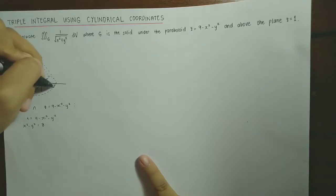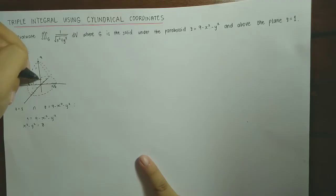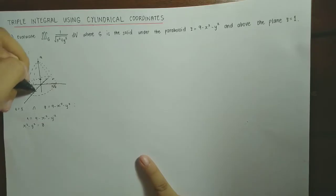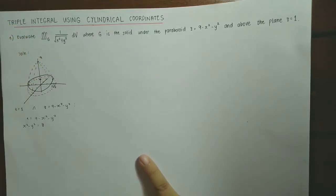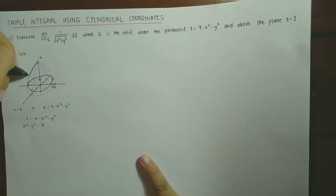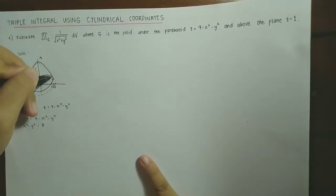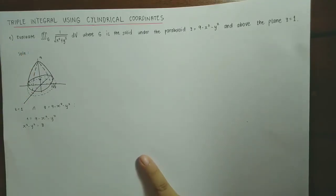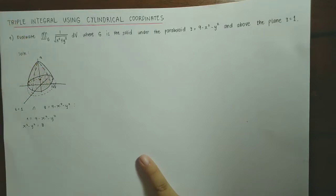So at z = 1, we have a circle of radius 2√2. Let's shade this up — this is our solid G.